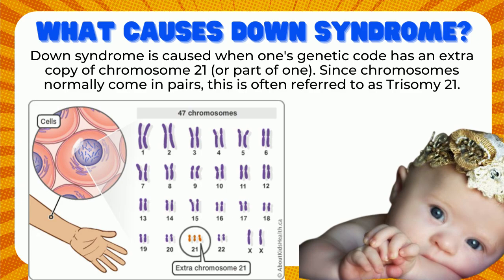Down syndrome is caused when one's genetic code has an extra copy of chromosome 21. Since chromosomes normally come in pairs, this is often referred to as trisomy 21.